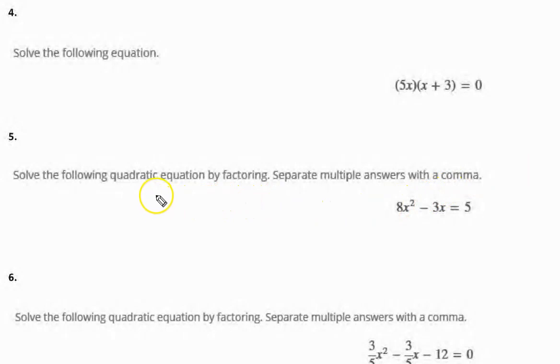All right, let's write this one out big here. So, this is 8x squared minus 3x. Now, it's not in standard form. So, we have to take this 5, transpose it, and then equal it to 0. All right, so take a few moments. See what you can come up with in factoring it.